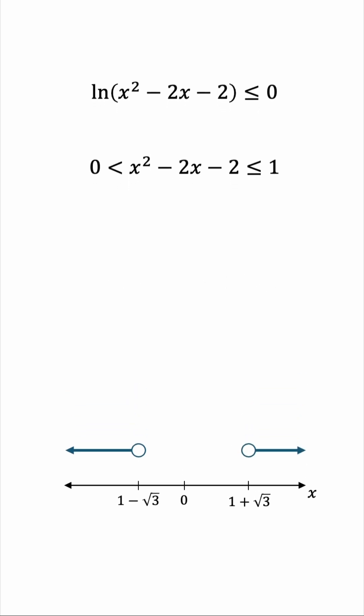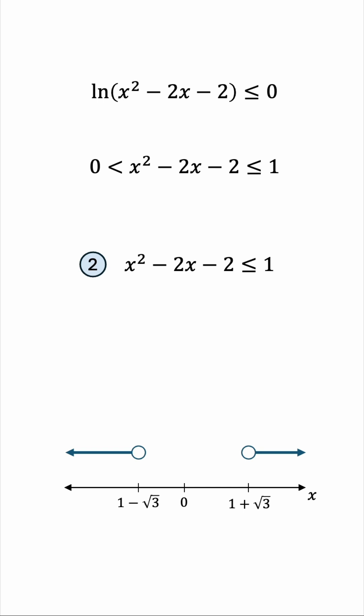The second inequality is the right-hand side, which is x² - 2x - 3 ≤ 0. This one is factorable, its roots are easier to find. These are -1 and positive 3.